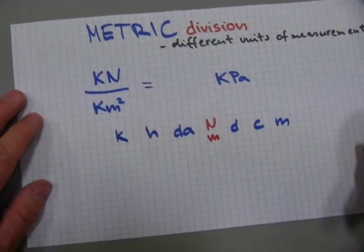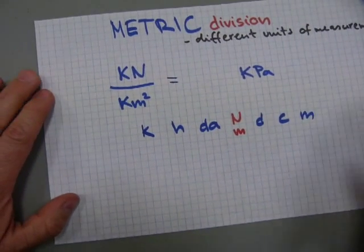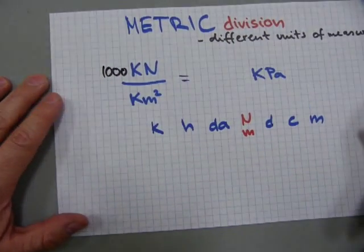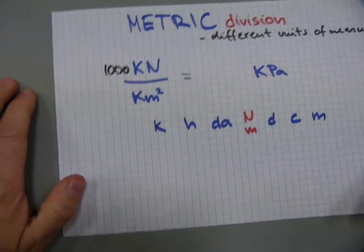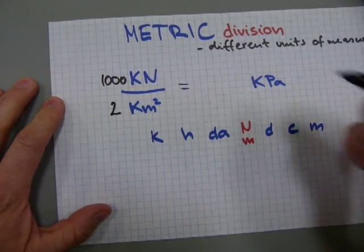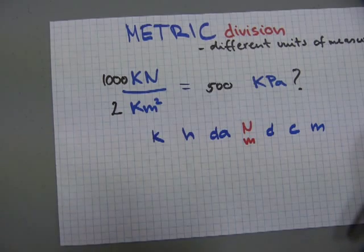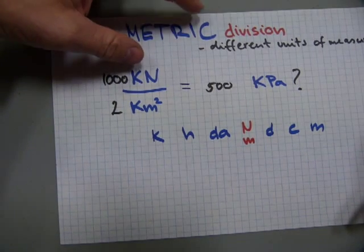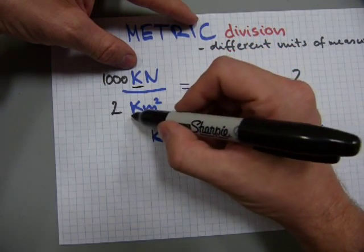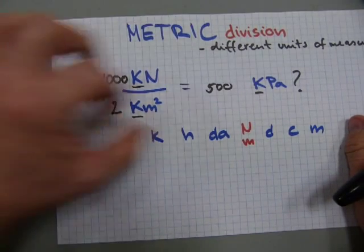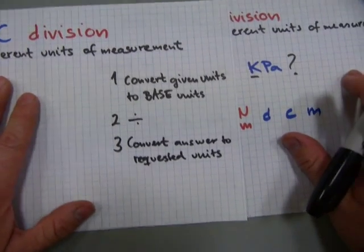Let me demonstrate here with this one. Kilonewtons and square kilometers will not make kilopascals. If you have a huge force of 1000 kilonewtons applied over a surface of 2 square kilometers, is that gonna be equal to 1000 divided by 2, 500 kilopascals? No, it won't. It doesn't work this way. If these were base units, it would work, but they have metric prefixes kilo and kilo. And the requested is also kilo, but the math doesn't work out this way. So this one is incorrect. You have to follow this three-step procedure.